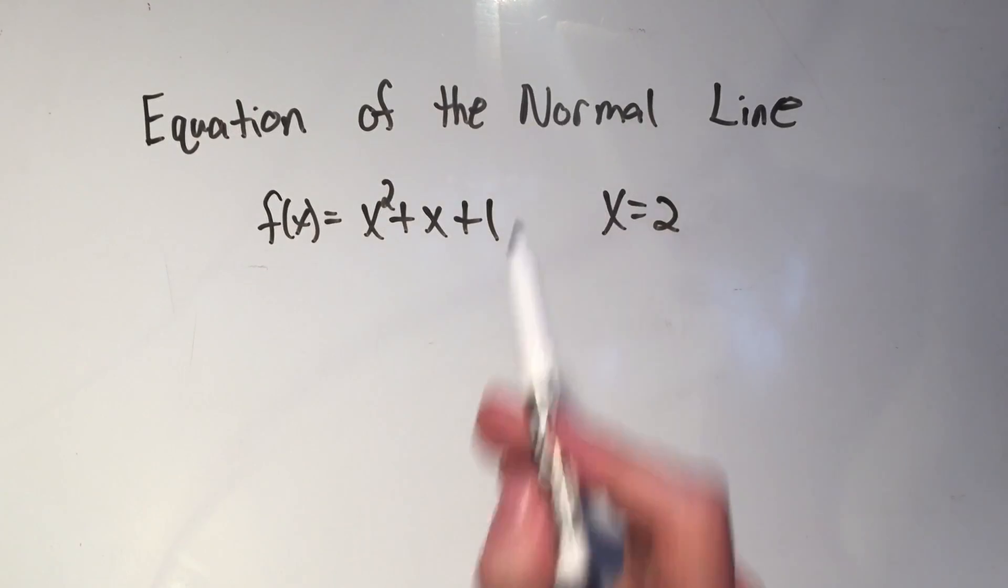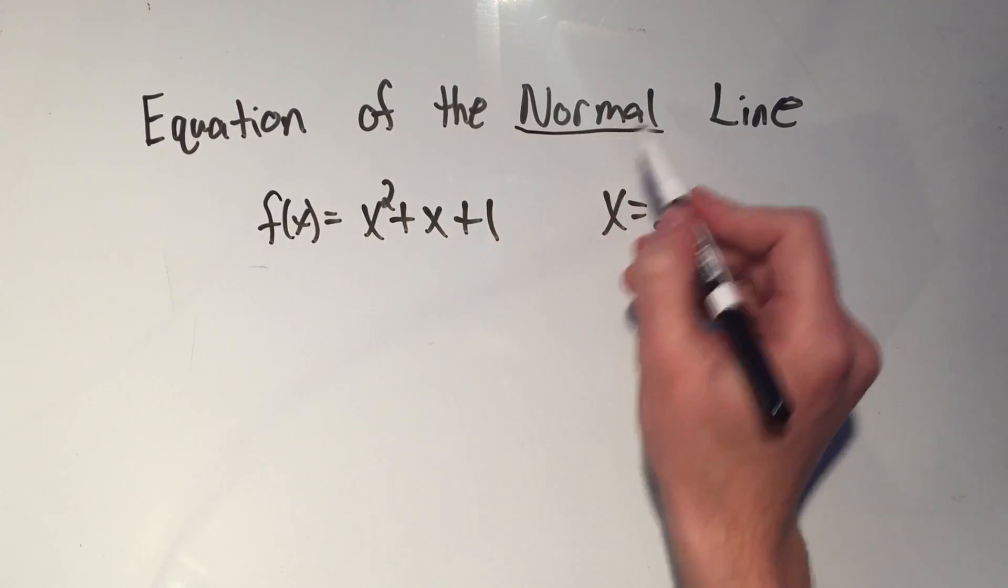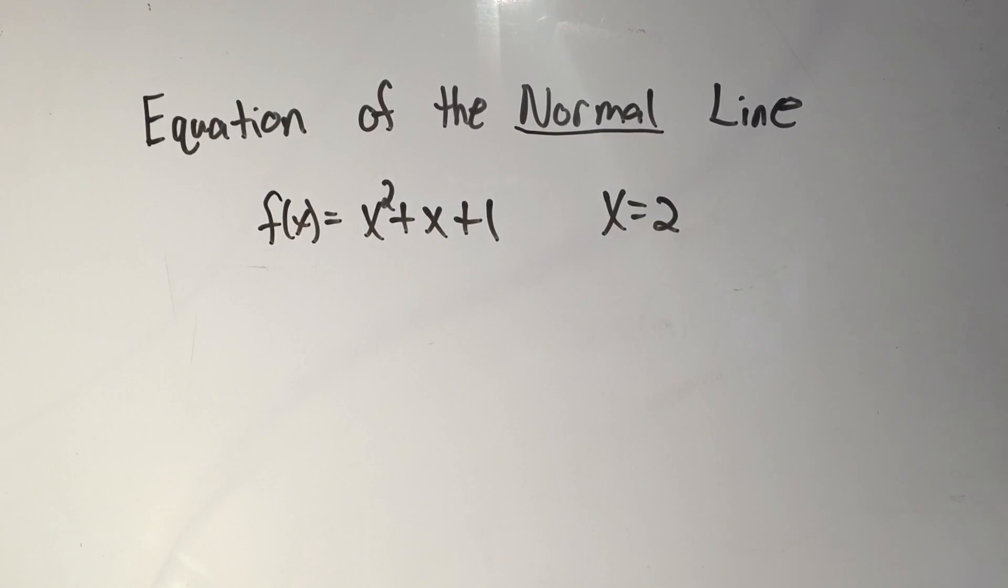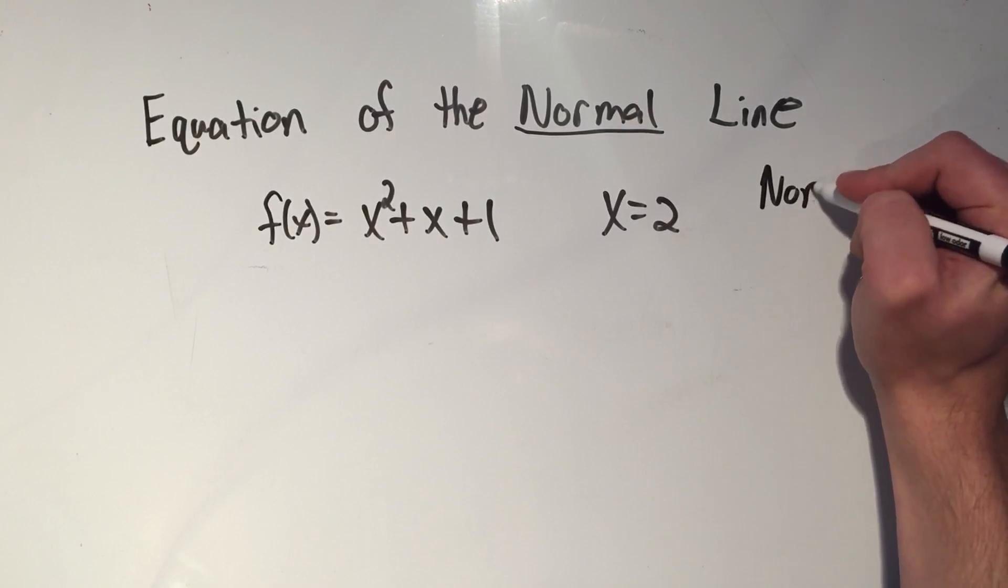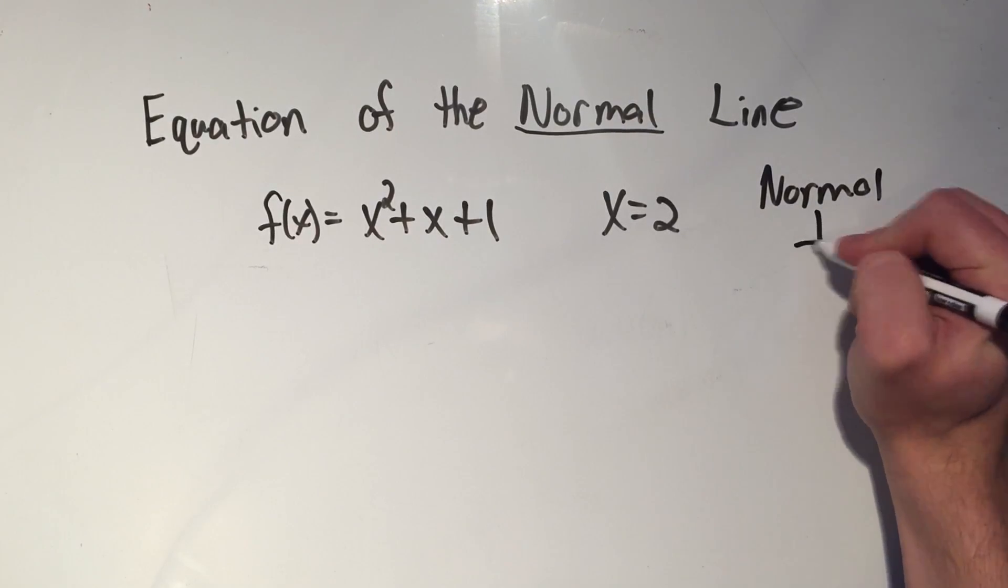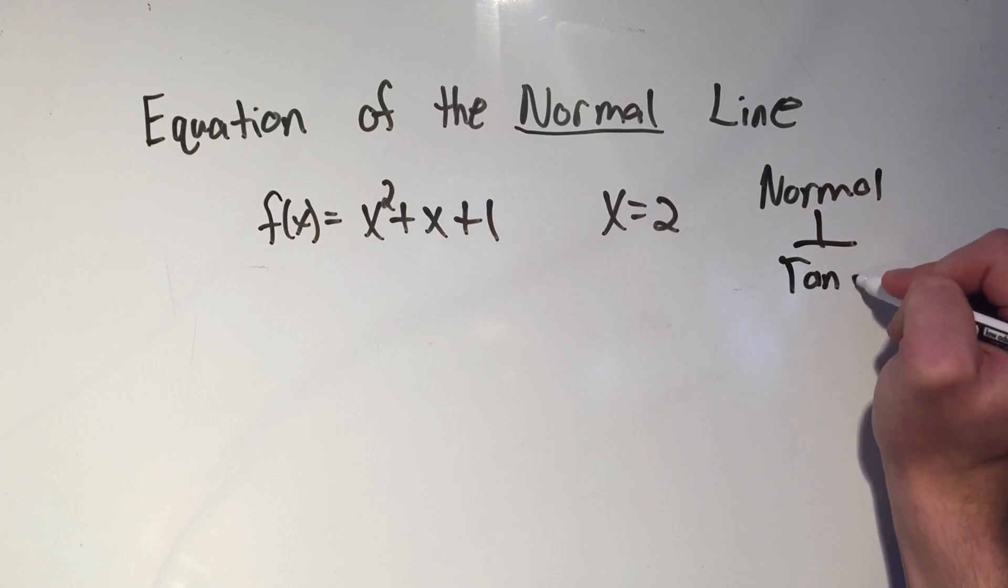If you want to find the equation of the normal line, not the tangent line, it's the exact same process. All you have to know is that the normal line is perpendicular to the tangent line.